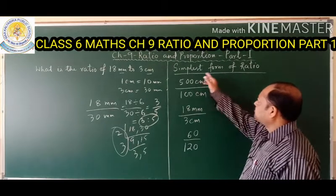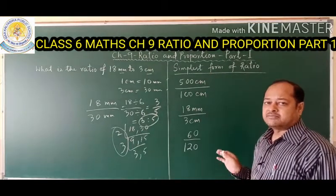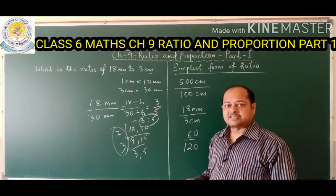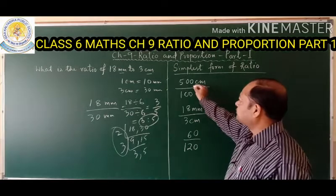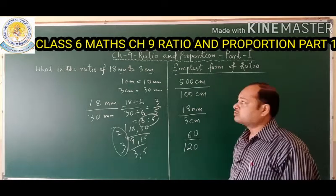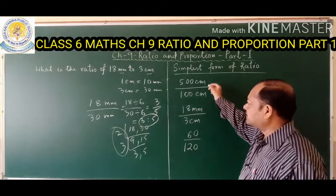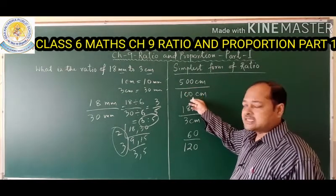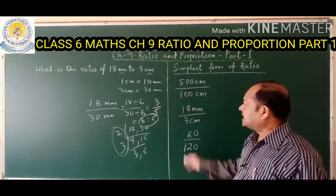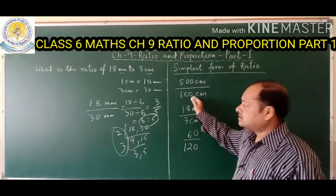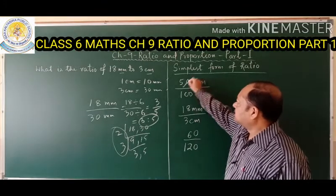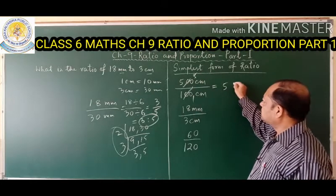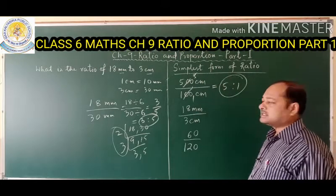Now let's look at the simplest form of a ratio. The simplest form is the minimized or lowest form. For example, 500 centimeters by 100 centimeters — to make it the simplest form, divide both numerator and denominator by the HCF, which is 100. So the ratio becomes 5 is to 1.